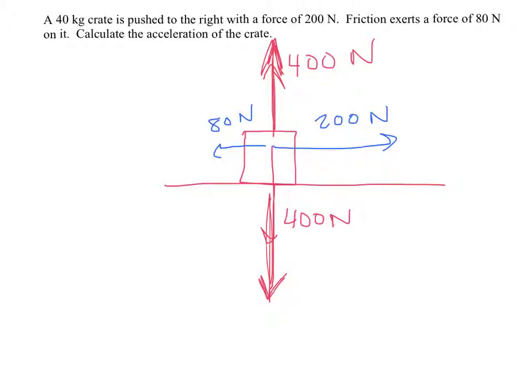the net force then, the net force on this crate, F net, the upward and downward forces cancel each other, so it's really just a matter of the 80 and the 200. It's going to be a net force of 120 newtons to the right. So earlier when we said that the equation F equals MA, that wasn't entirely true.